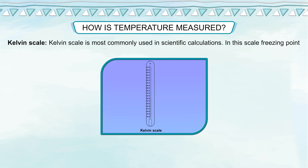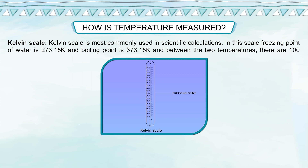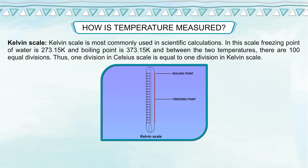Kelvin scale: The Kelvin scale is most commonly used in scientific calculations. In this scale, the freezing point of water is 273.15 K and the boiling point is 373.15 K, and between the two temperatures there are 100 equal divisions. Thus, one division in Celsius scale is equal to one division in Kelvin scale.